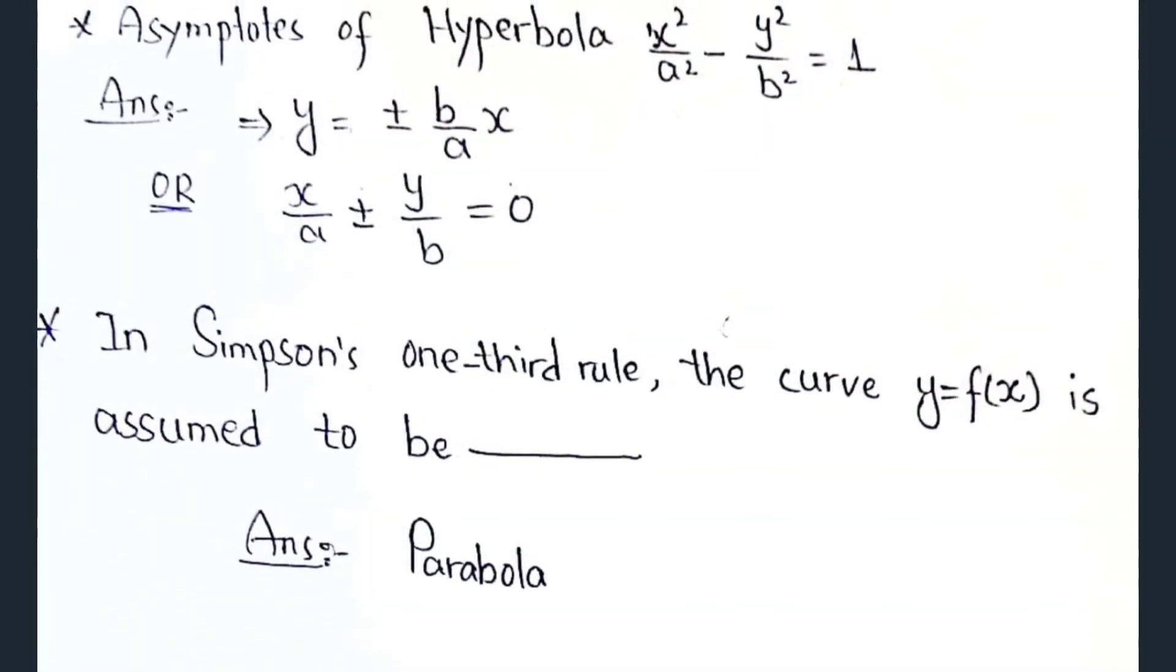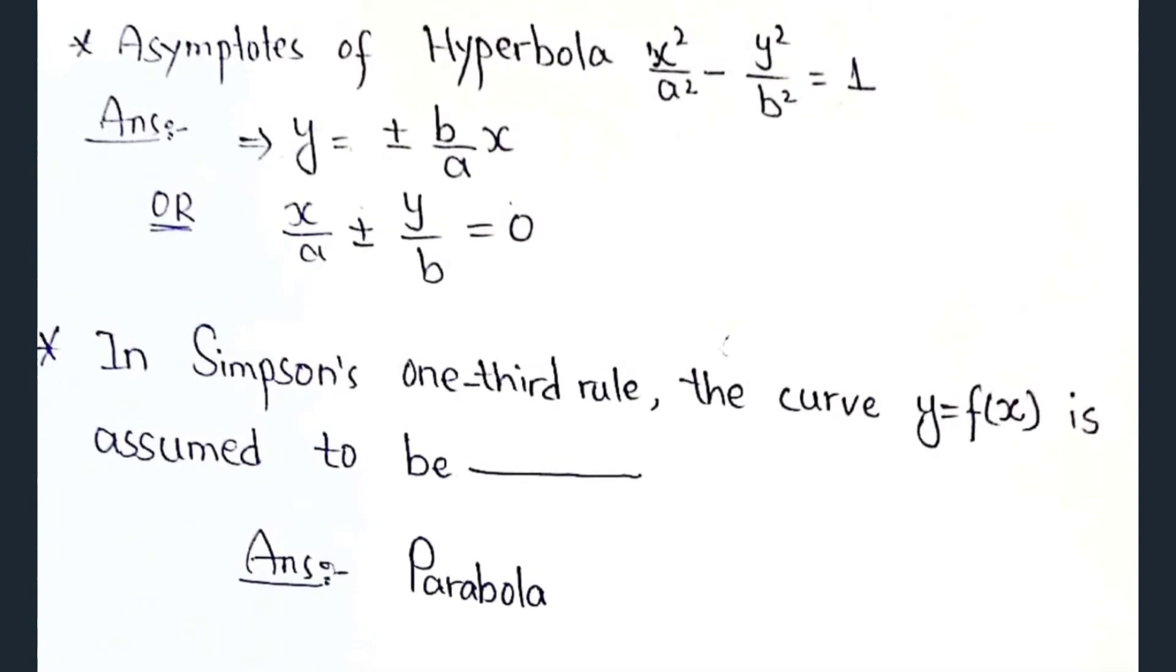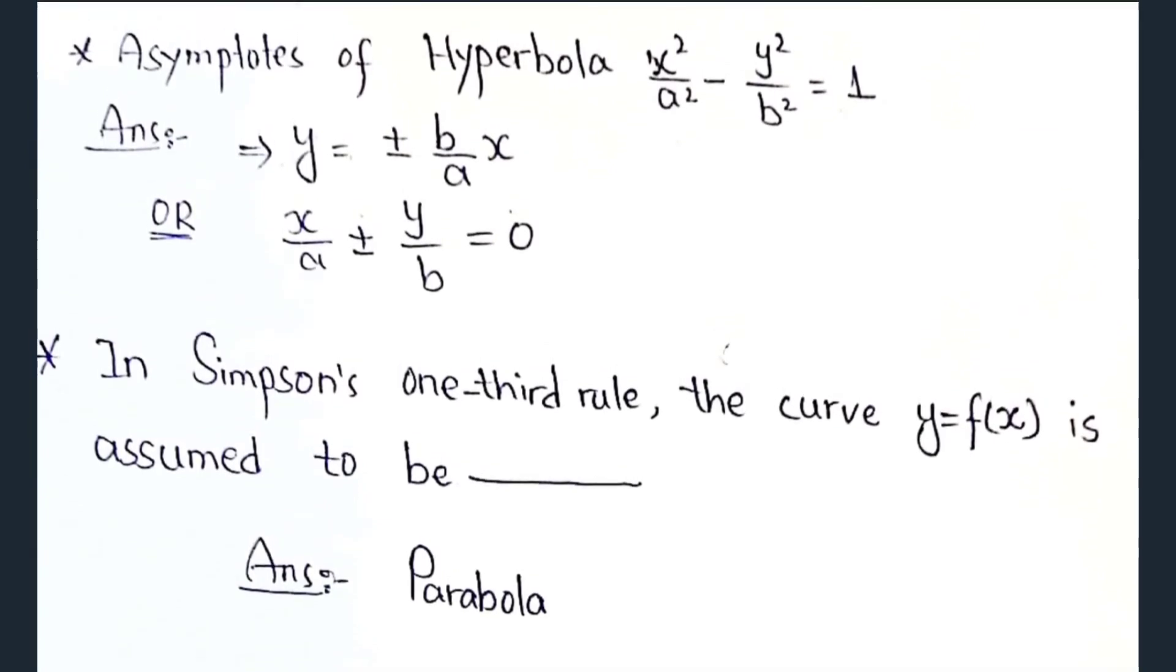Asymptotes of hyperbola x square over a square minus y square over b square equals 1. Asymptotes are y equals plus minus b over a of x. Or you can check the other one.